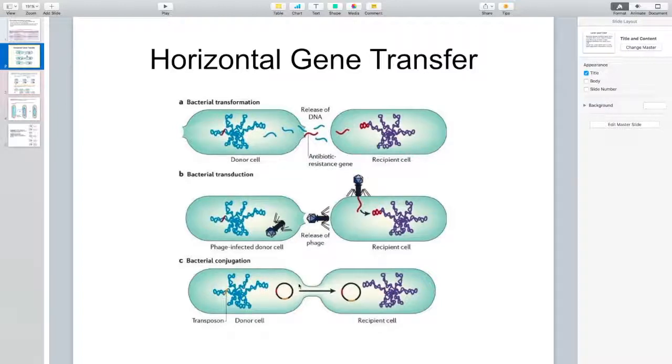The bacteria that contain pilus, they will come in contact with another bacteria that doesn't have a pilus. Now the bacteria with the pilus, we're going to call it the donor cell, can pass on one of its genes by incorporating it into this individually replicating circular piece of DNA inside it. It's called plasmid.